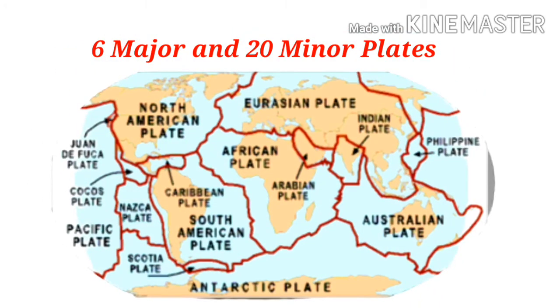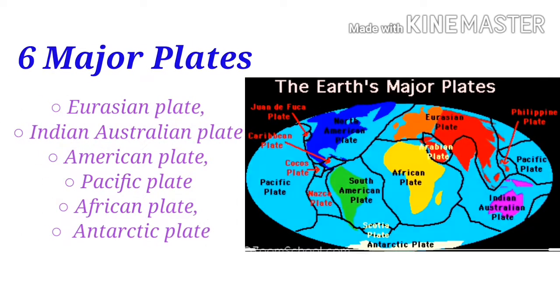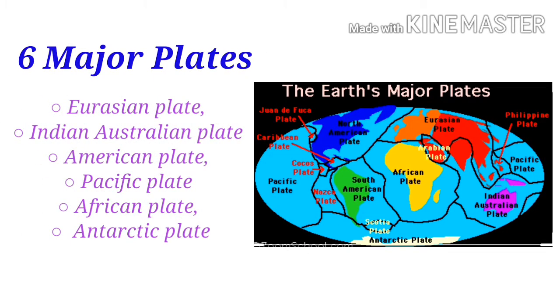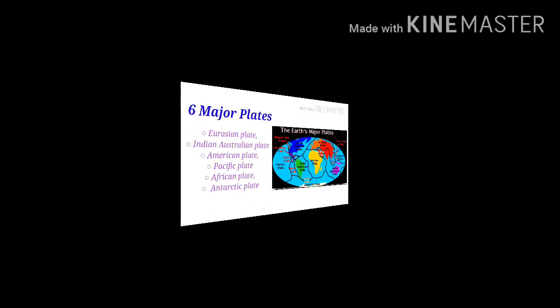There are six major and 20 minor plates. The six major plates are: the Eurasian plate, the Indian-Australian plate, the American plate, the Pacific plate, the African plate, and the Antarctic plate.